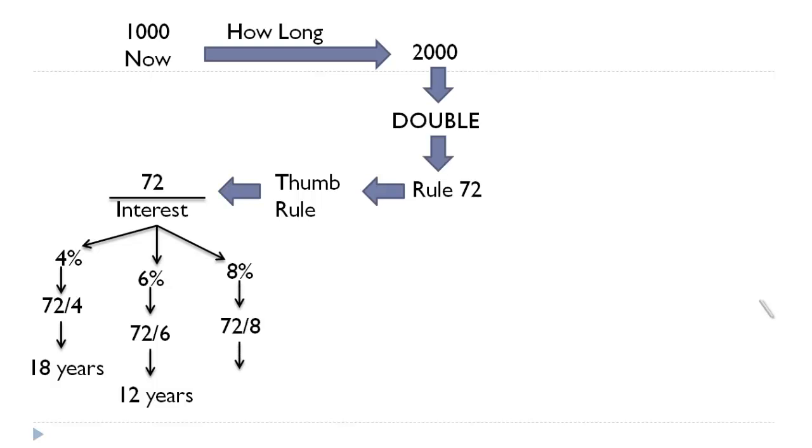So this is all about the doubling period. Here you just have to divide 72 by the rate of interest, which would tell you how long it would take to double the investment. Thank you.